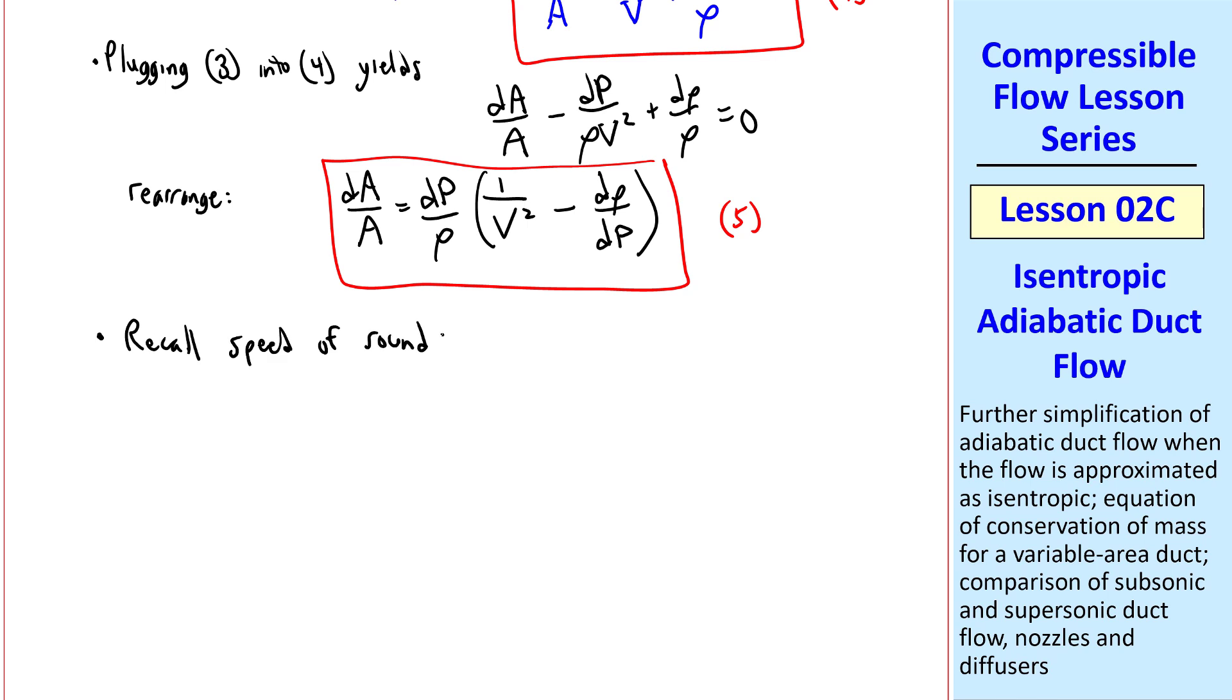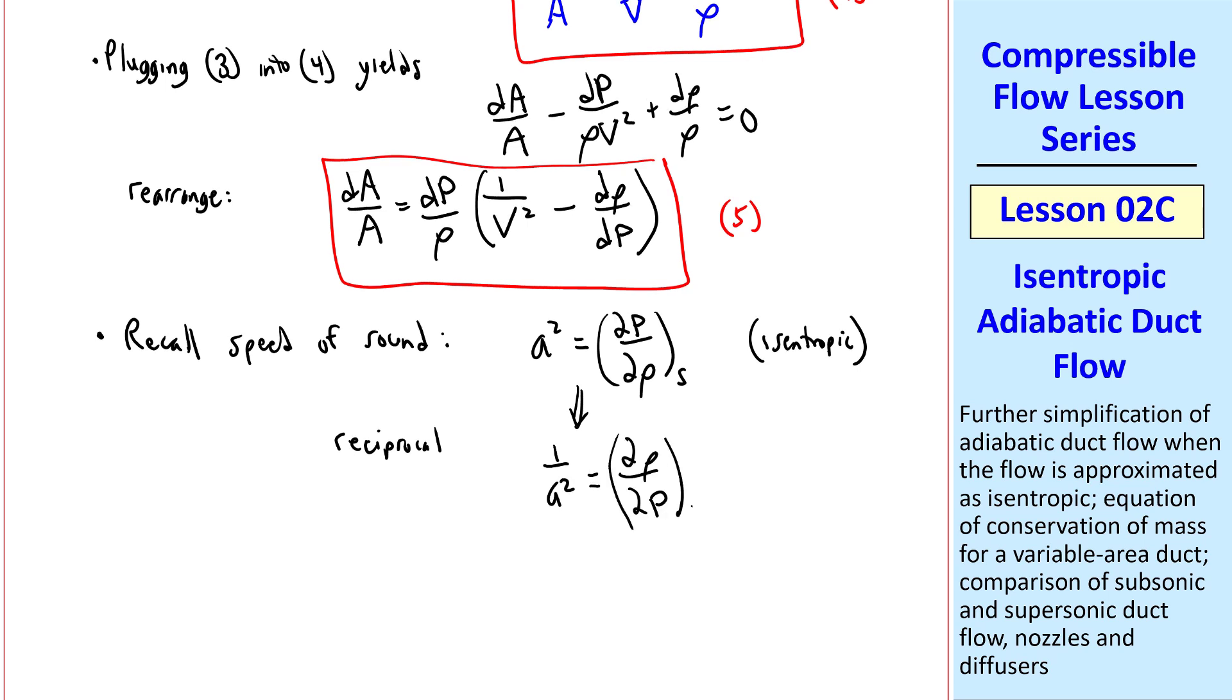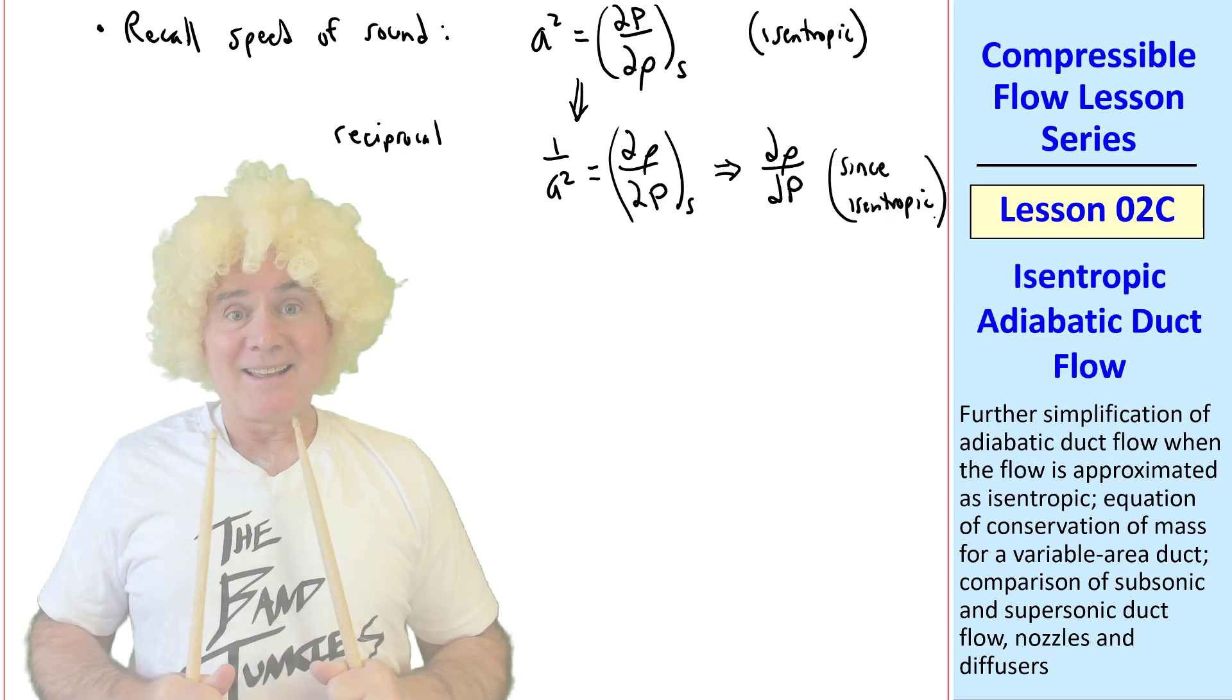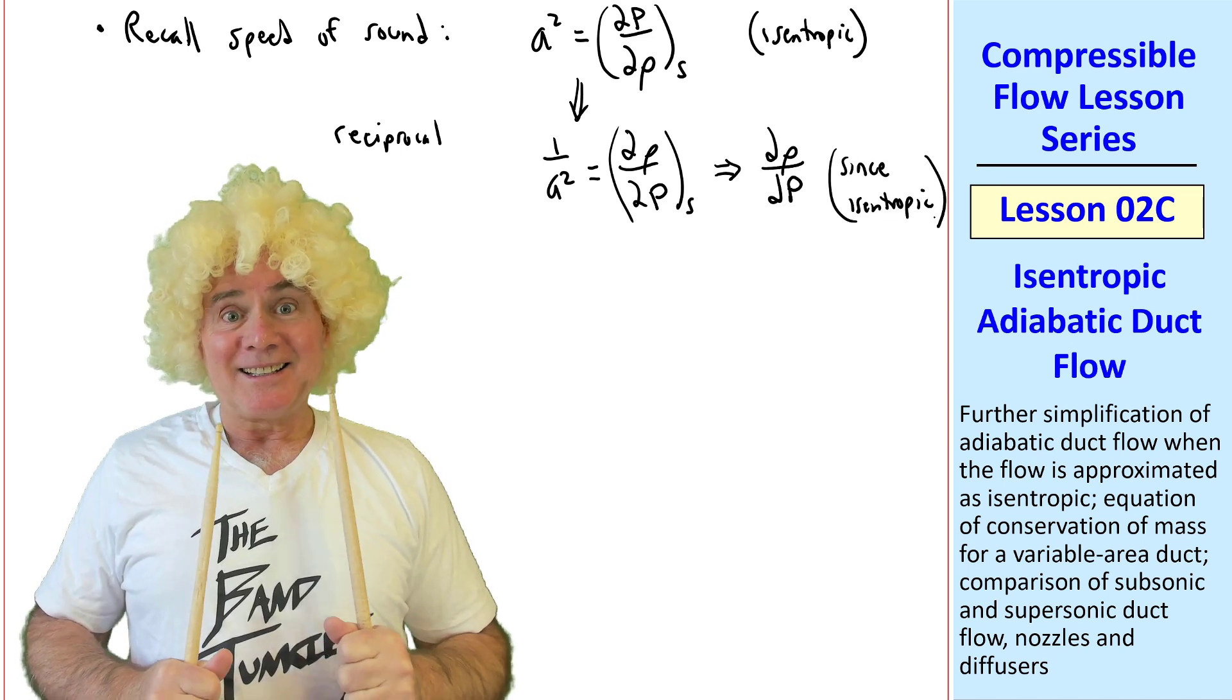Now we get a little tricky. Recall our definition of the speed of sound from a previous lesson. A squared is del P del rho at constant entropy. In other words, isentropic. We can take the reciprocal of these terms and write 1 over A squared equal del rho del P at constant entropy. But since we're talking about an isentropic process, we'll call this d rho dP for our isentropic flow.